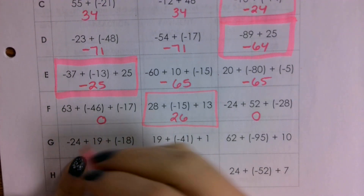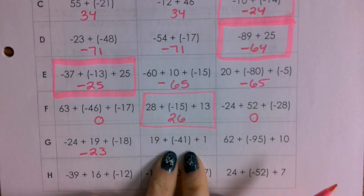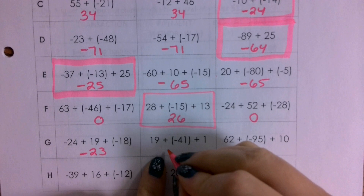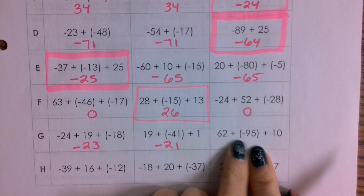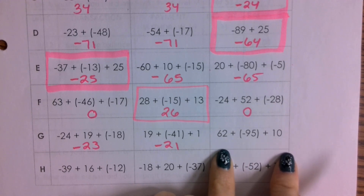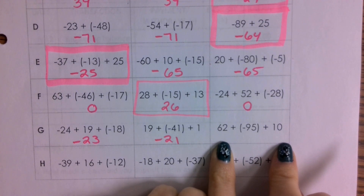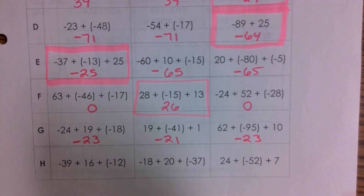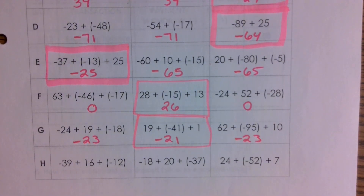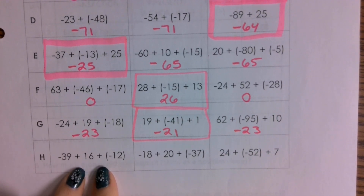For problem G, Josiah, answer one — negative 23. Guadalupe, answer two — negative 21. And Isaiah, go ahead and do 62 plus negative 95 plus 10 right now — negative 23. So the one that doesn't belong is negative 21.